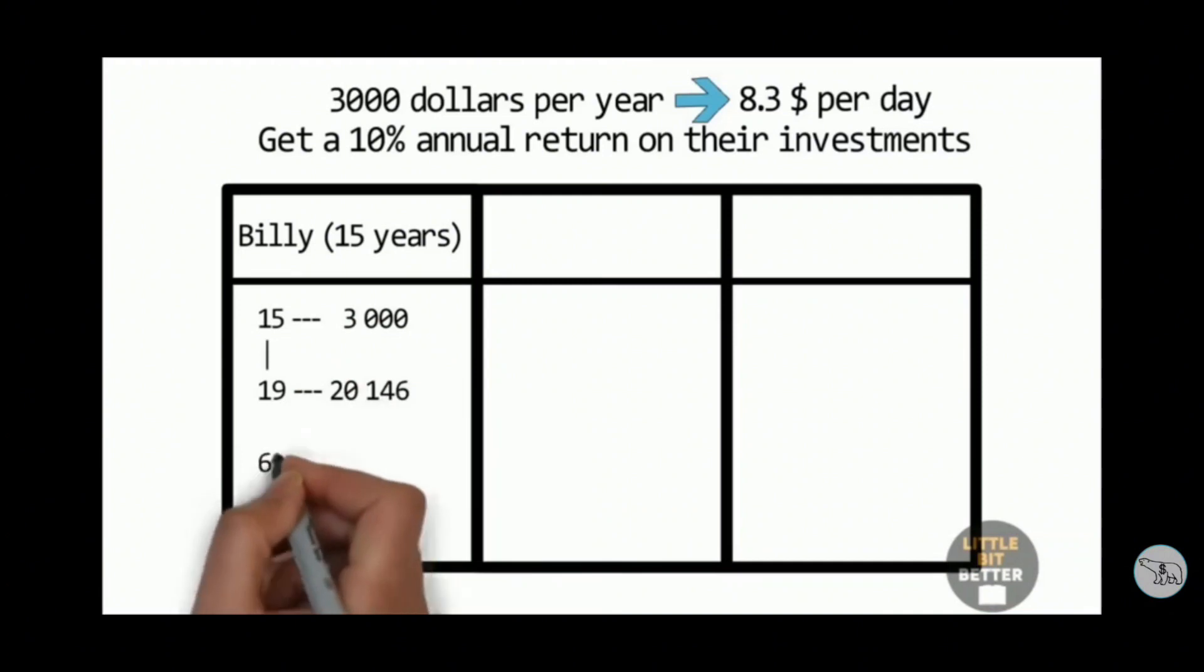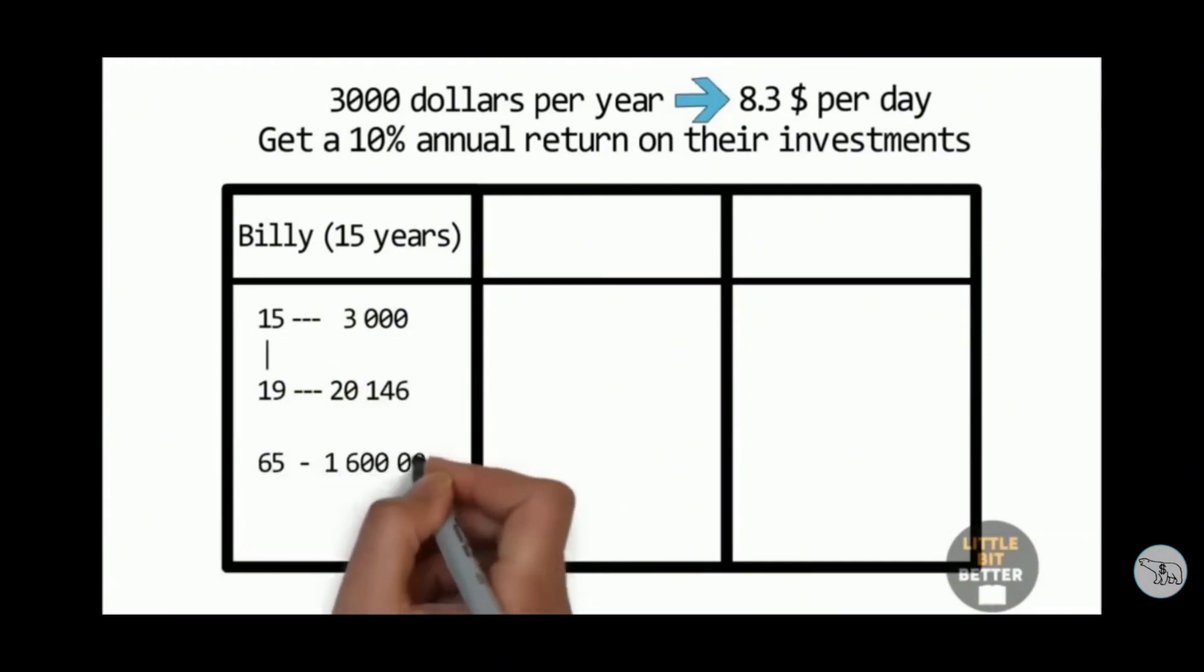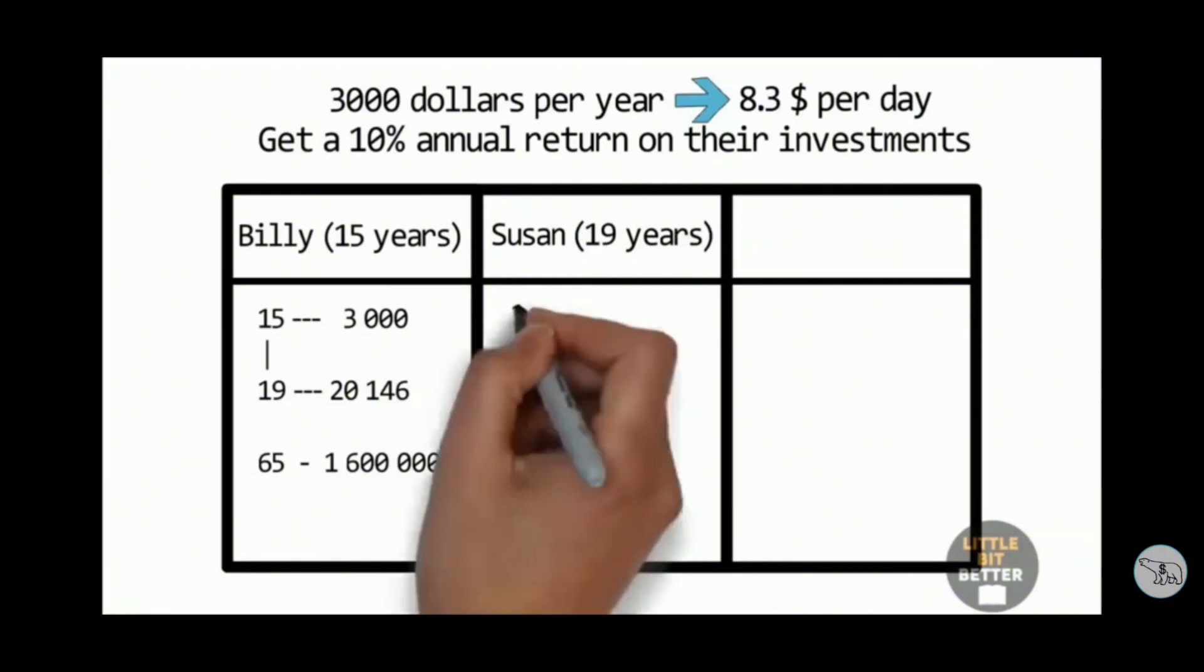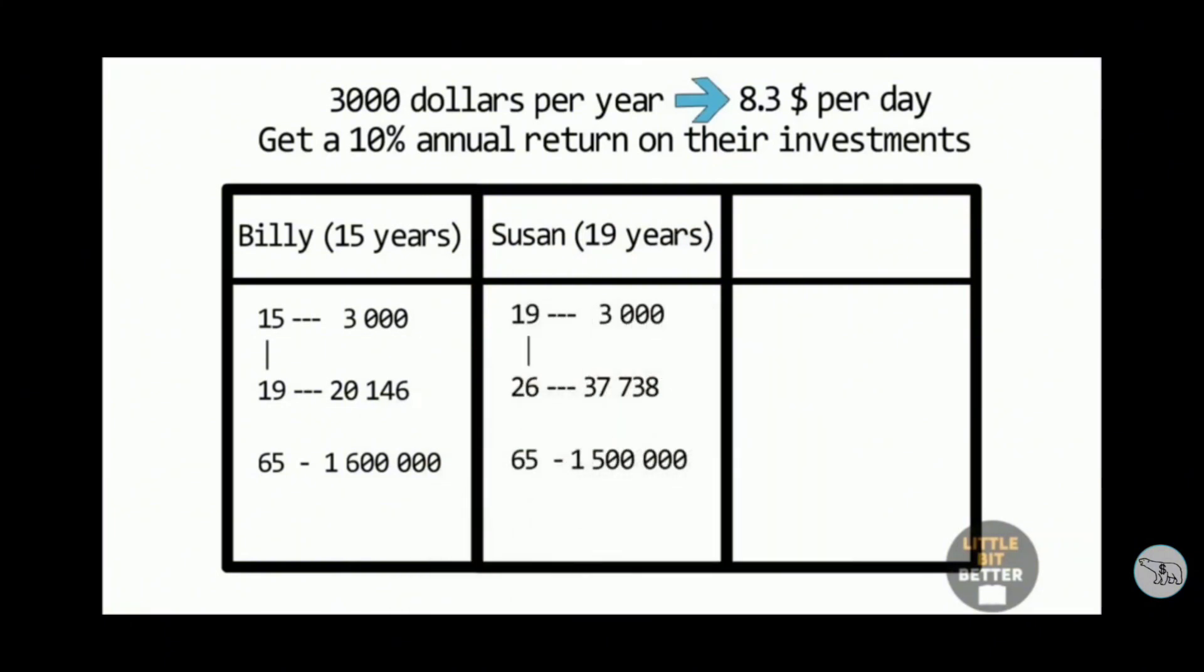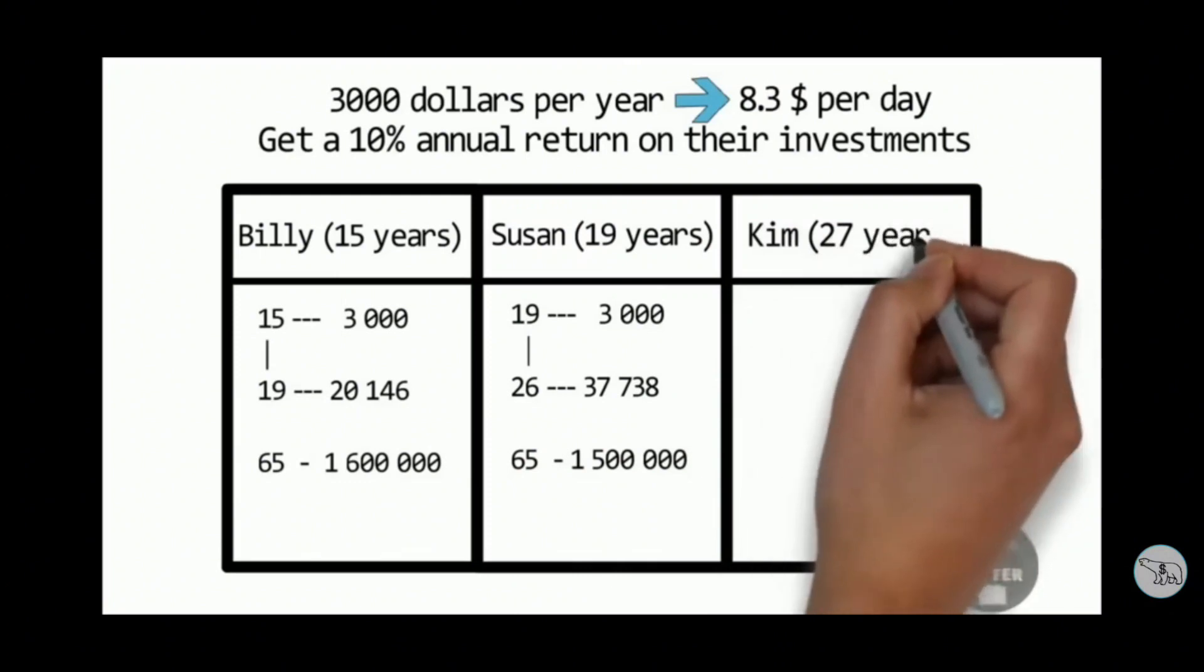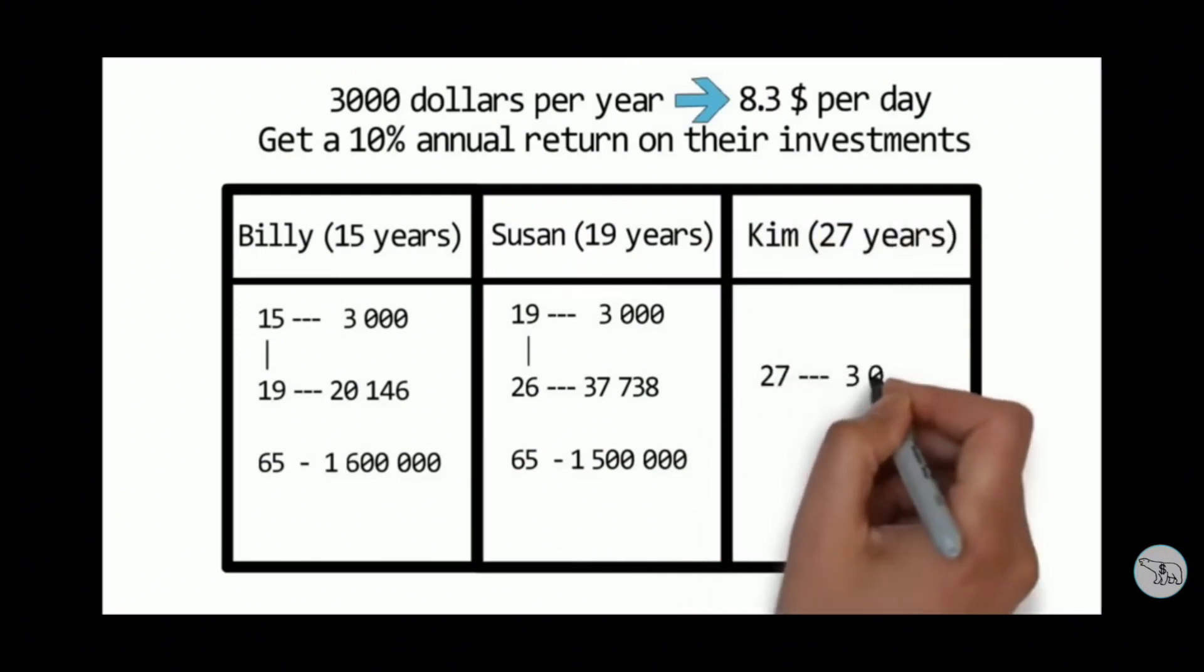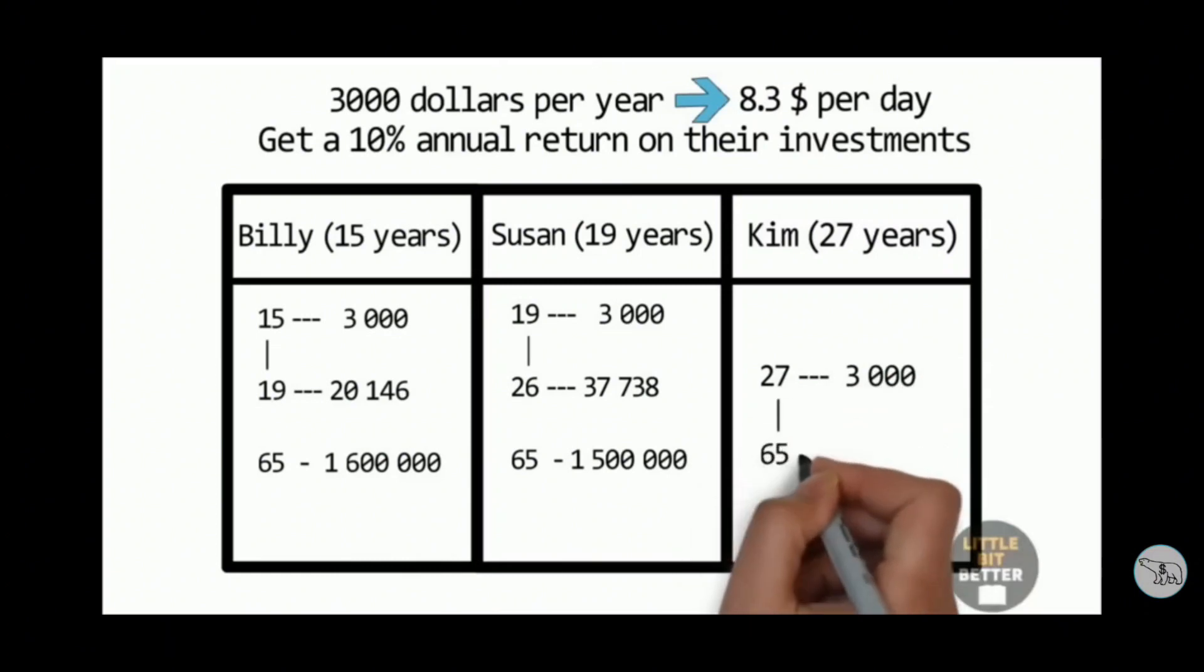Billy starts investing at the age of 15 and only invests for five years until the age of 19. Then he simply stops investing and lets his money grow without adding anything extra. Susan starts investing at the age of 19 and invests for eight years until the age of 26. Finally, Kim starts investing at the age of 27 and keeps investing until the age of 65. She invests $3,000 every year, as Billy and Susan do, but she does it for 39 years.